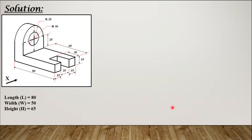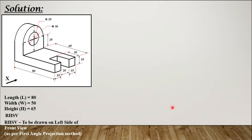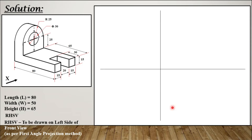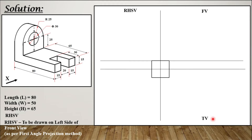Starting the solution with this data: since nothing is mentioned in the question, by default the first-angle projection method is used. According to first-angle projection, the right-hand side view has to be drawn on the left-hand side of the front view. We draw the layout lines and locate the positions: right-hand side view on the left, front view in the center, and the top view below it. We always draw the front view first, then the top view, then the side view.